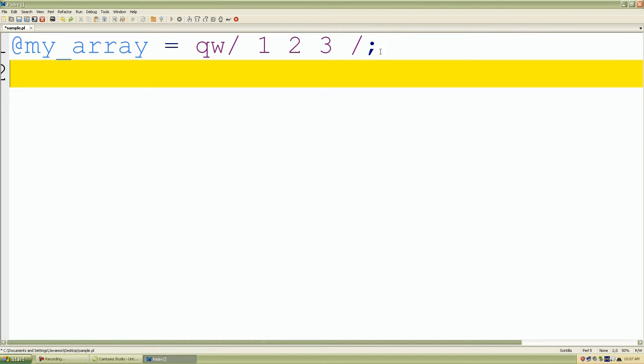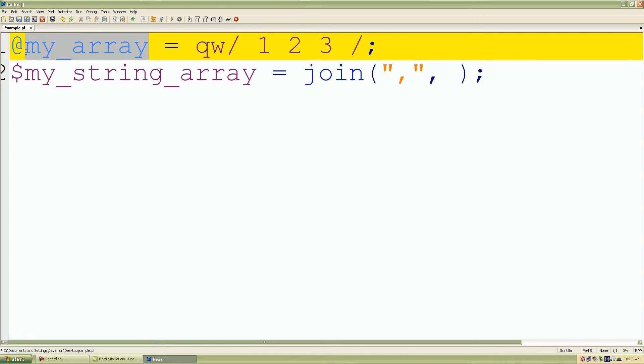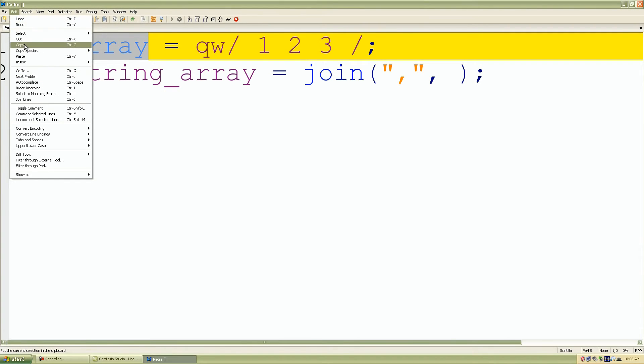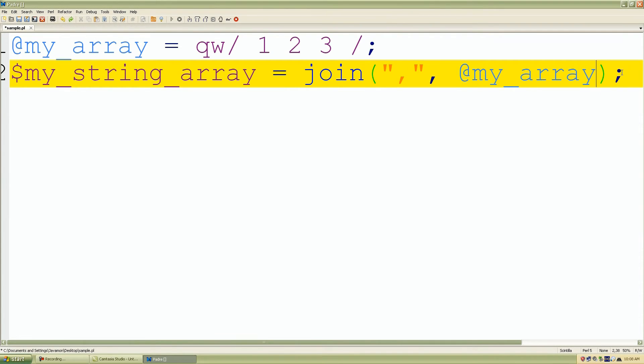I'll create a scalar variable called myStringArray and assign it our join operator. For our first parameter, we use a string character to separate our values. I'll use a comma. For our second parameter, we pass in our entire array, my_array. I'll copy and paste it in for our second parameter.